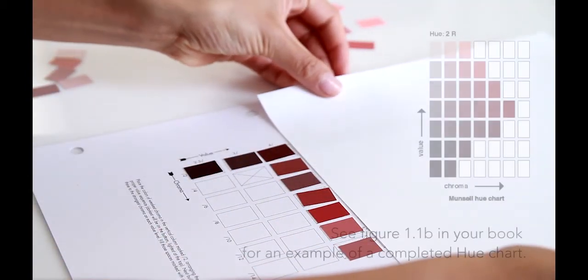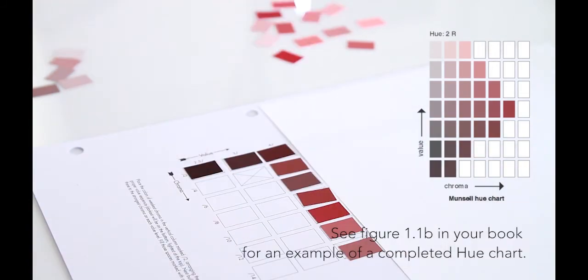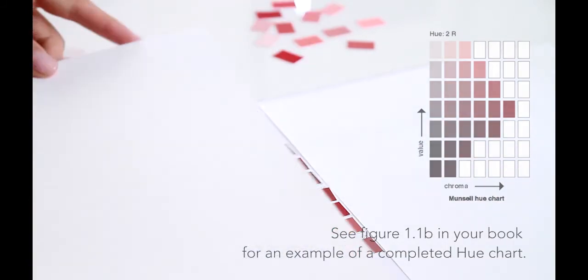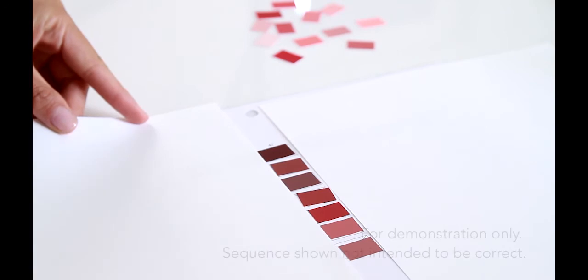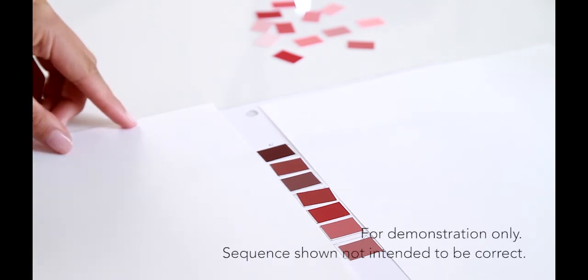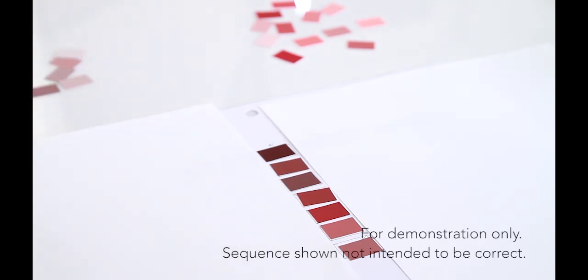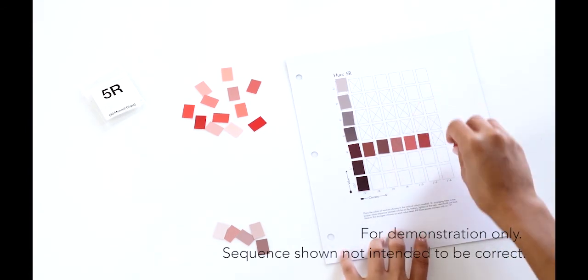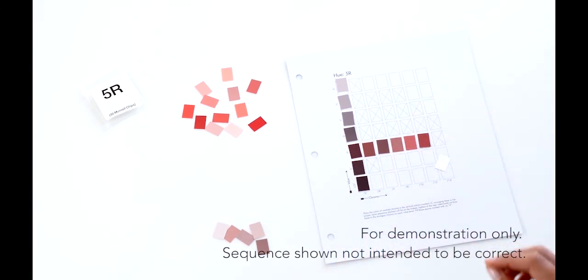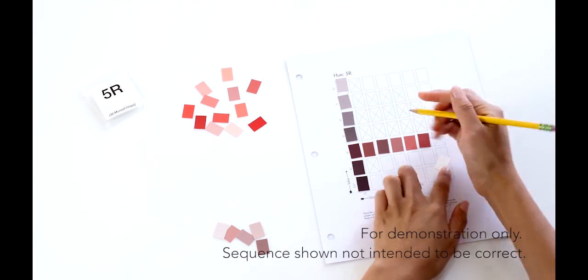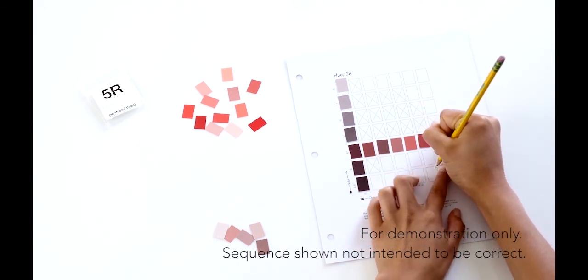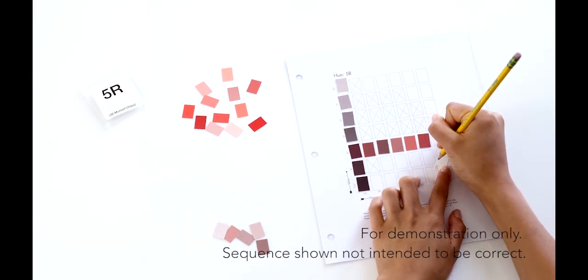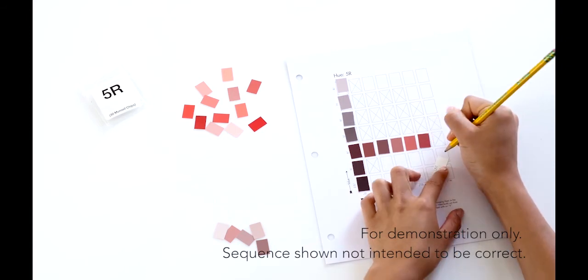After all the chips have been placed on the chart, to check that the value chroma sequence is correct, you can isolate each horizontal row or vertical column between two pieces of paper. The colours should appear to sequence smoothly. When the arrangement is correct, turn each chip over, one by one, and write its Munsell notation on the back, and affix the chips.